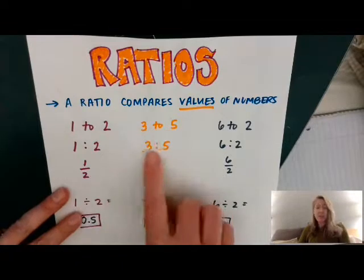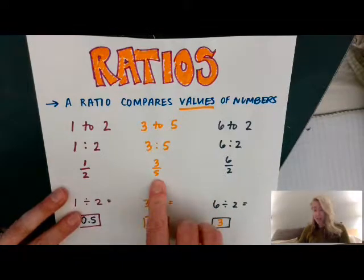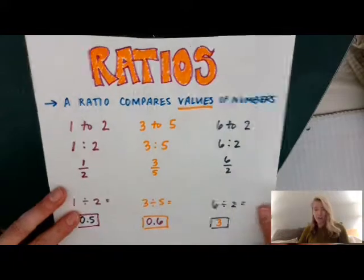We can do the same thing with 3 to 5, 3 colon 5, 3 over 5. Same with 6 to 2 in so many ways as well.